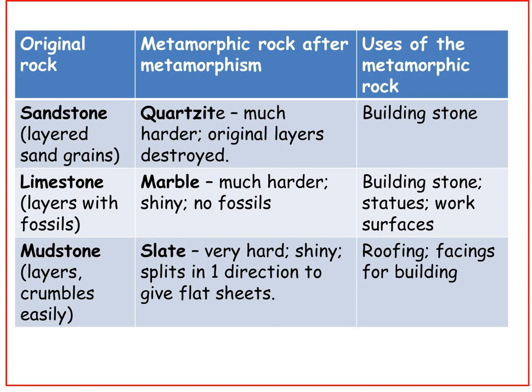Mudstone, which has layers and crumbles easily, can form the metamorphic rock slate, which is very hard and shiny, and splits in one direction to give flat sheets. It can be used for roofing or facings for buildings.